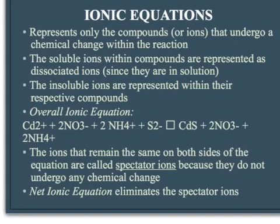We can use what we've learned about dissociation and solubility rules to write what's called an ionic equation. The ionic equation is very much like a standard chemical equation, except that we represent the ions individually. We show all of the ions on the left side, and then all of the ions and insoluble products on the right side. Anything soluble is shown as an individual ion; anything insoluble — like cadmium sulfide here — is represented as a compound, since there are no individual ions left in solution after the reaction.